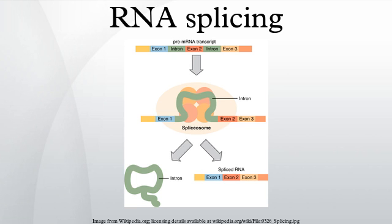Formation and activity: Splicing is catalyzed by the spliceosome, which is a large RNA-protein complex composed of five small nuclear ribonucleoproteins. The RNA components of snRNPs interact with the intron and may be involved in catalysis. Two types of spliceosomes have been identified which contain different snRNPs. The major spliceosome splices introns containing GU at the five-prime splice site and AG at the three-prime splice site. It is composed of the U1, U2, U4, U5, and U6 snRNPs and is active in the nucleus.